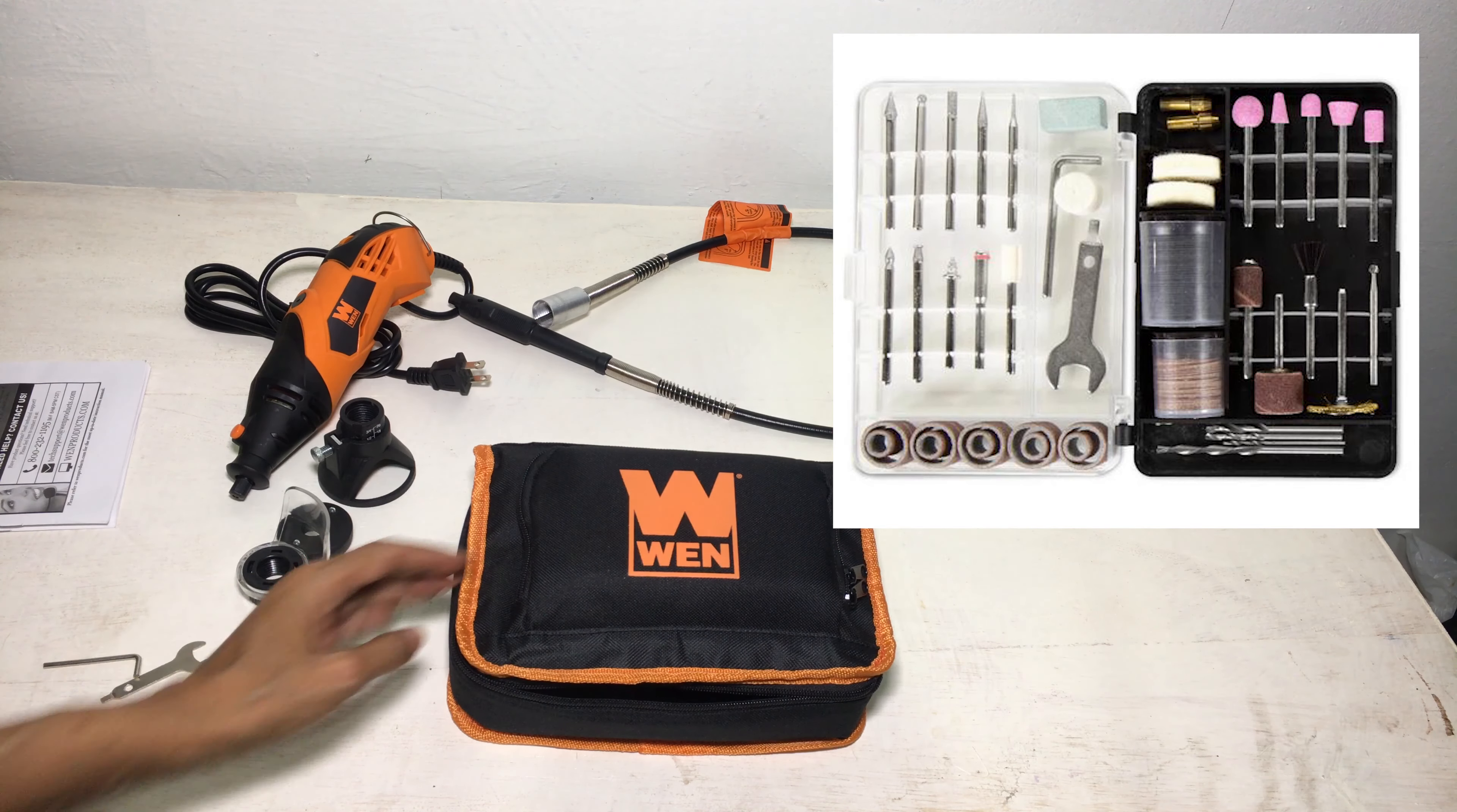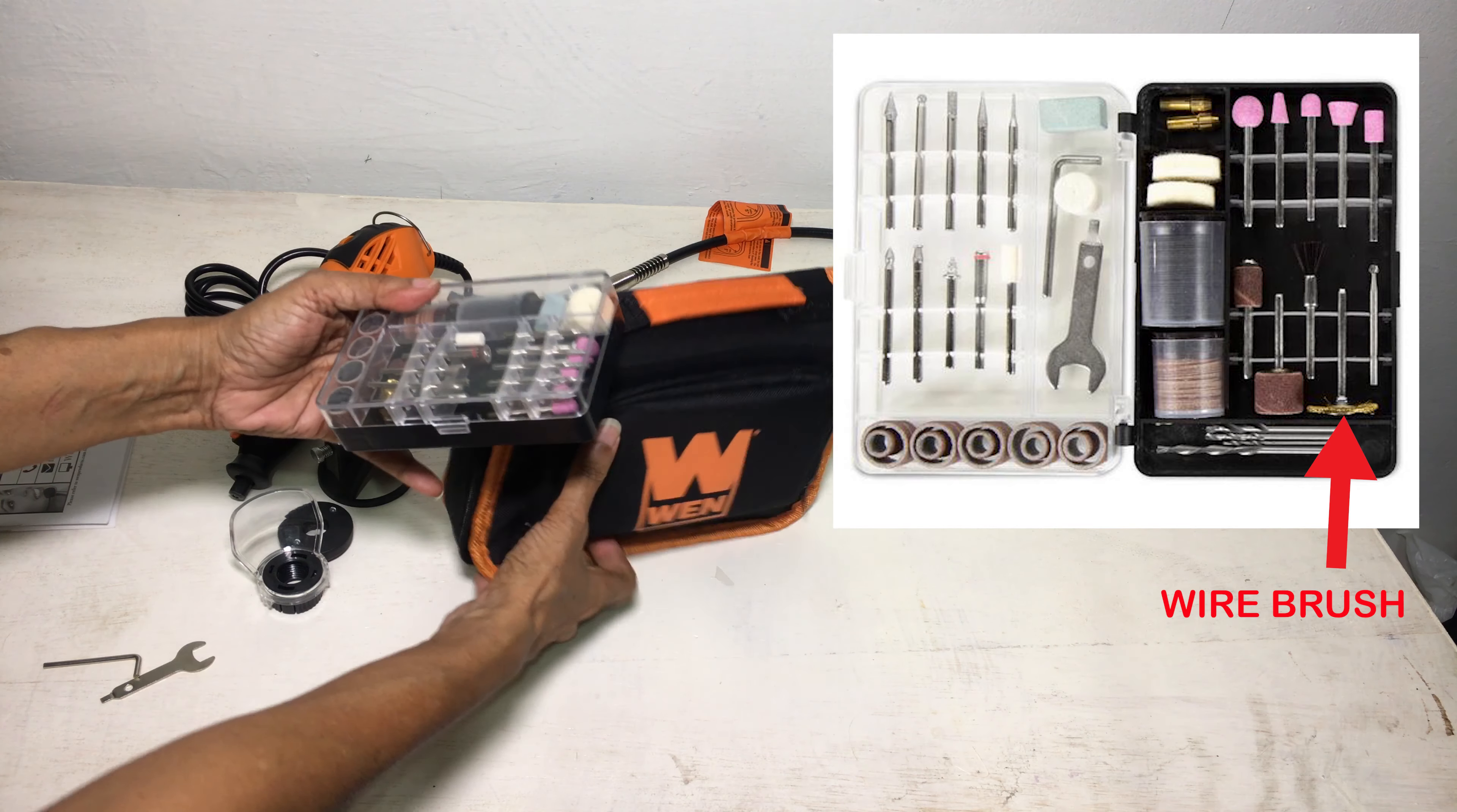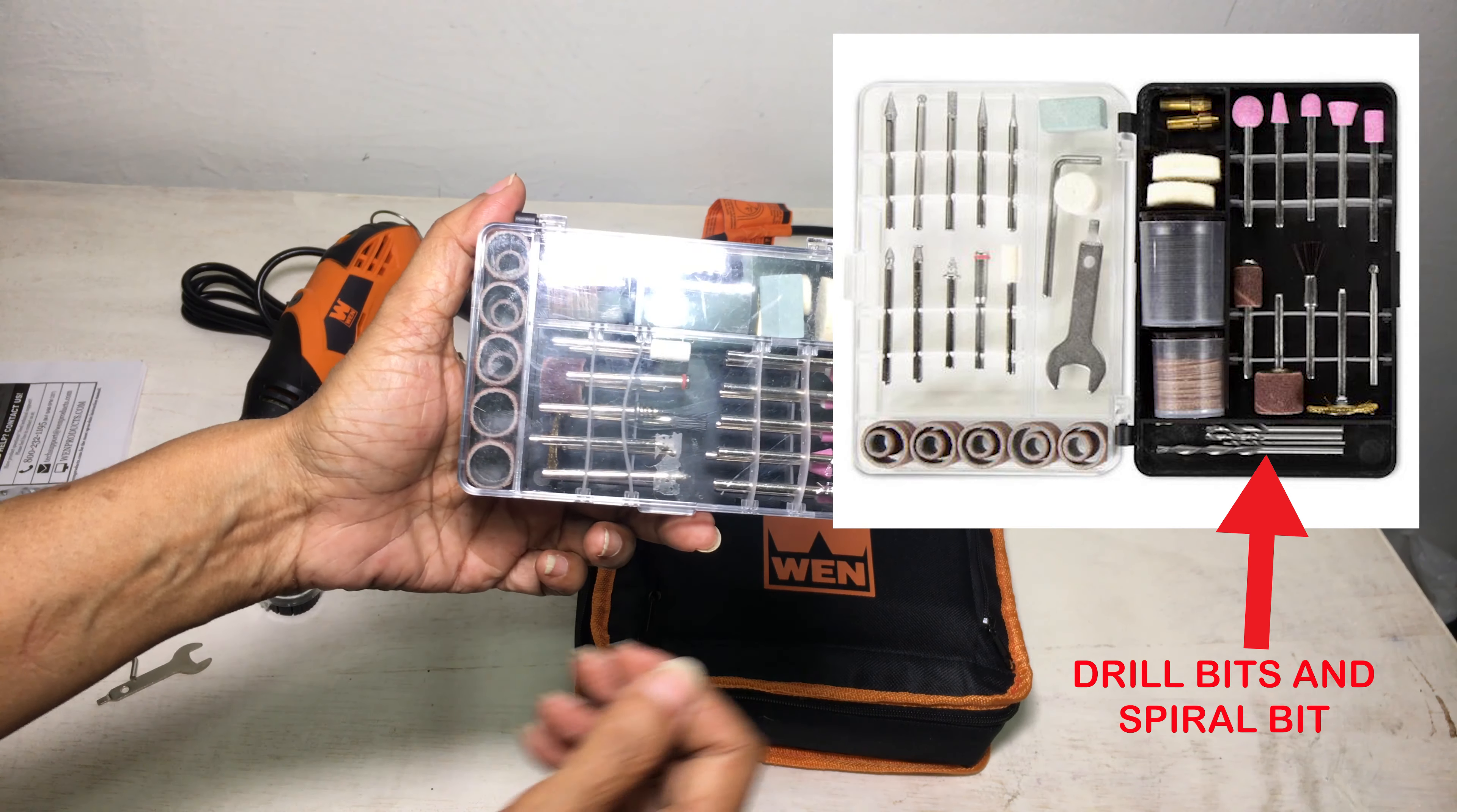The 100 accessory plus kit includes sanding drums, polishing wheel, sanding disc, cut-off wheels, mandrel, a wire brush, diamond coated bits, grinding stone bits, drill bits, a spiral bit, and more.